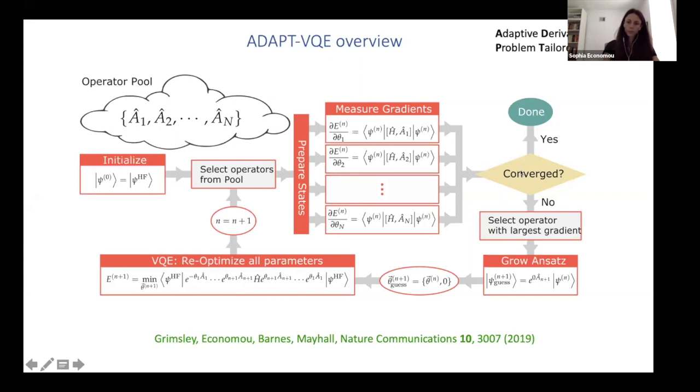So I already mentioned that this is quantum parallelizable and the algorithm ADAPT stands for adaptive derivative assembled to do this step, problem tailored ansatz.